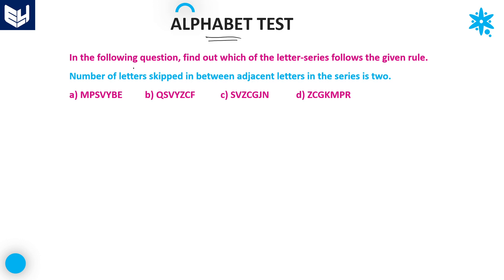The question is: in the following options, find out which of the letter series follows the given rule. One rule is given — what is that rule? The number of letters skipped in between adjacent letters in the series is 2. That is, which of the four given options satisfies this rule?